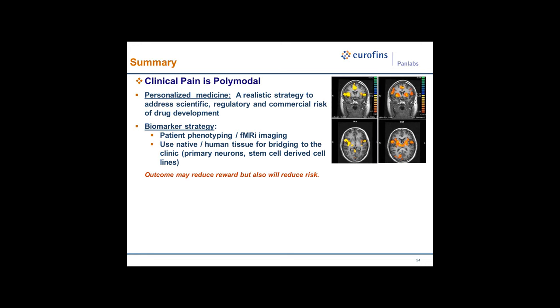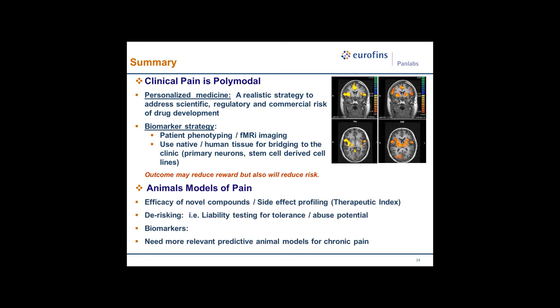Animal models of pain are needed to test efficacy of novel compounds, examine side effect profiling, develop therapeutic index early on, perform early de-risking, test liability for tolerance and abuse potential, employ more biomarkers, and — most importantly — develop more relevant predictive animal models for chronic pain. With that, I'll segue into Tamara King's presentation.